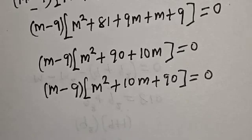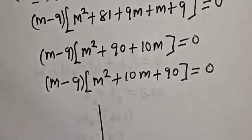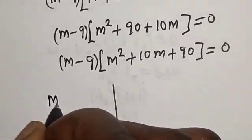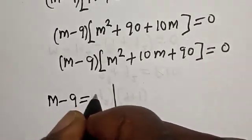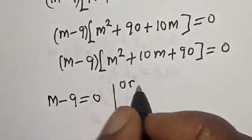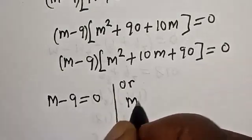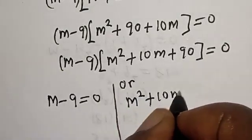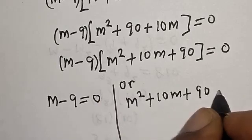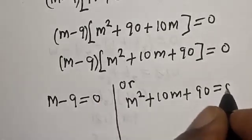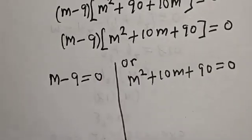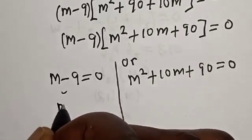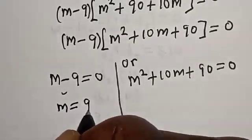Now there are two cases here. The first case is m minus 9 equals 0, giving m is equal to 9. The second case is m squared plus 10m plus 90 is equal to 0.